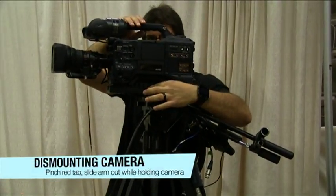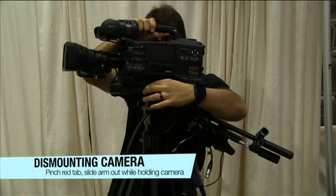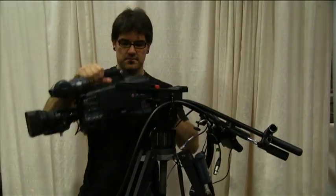To dismount the camera, pinch the red tab on the left side, slide the arm out, and then slide the camera backwards.